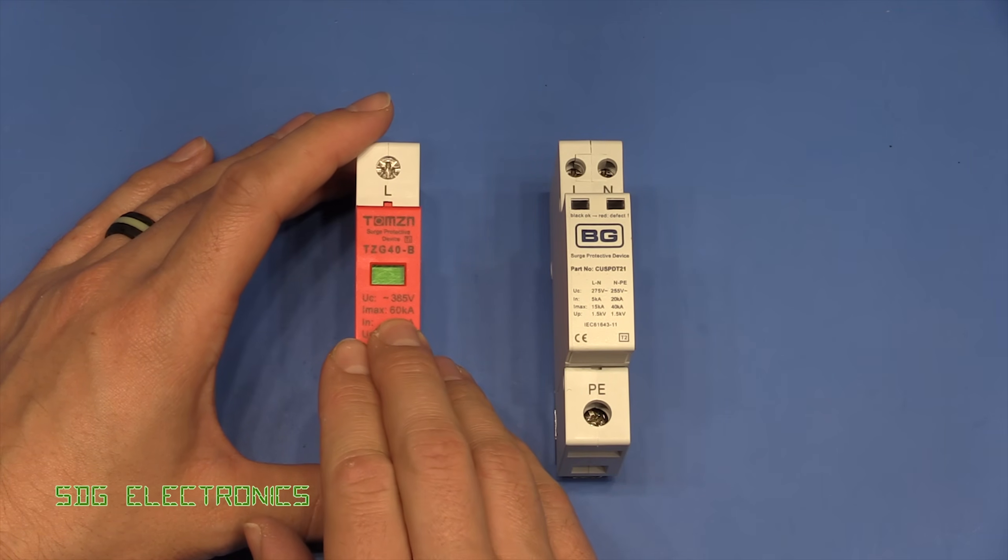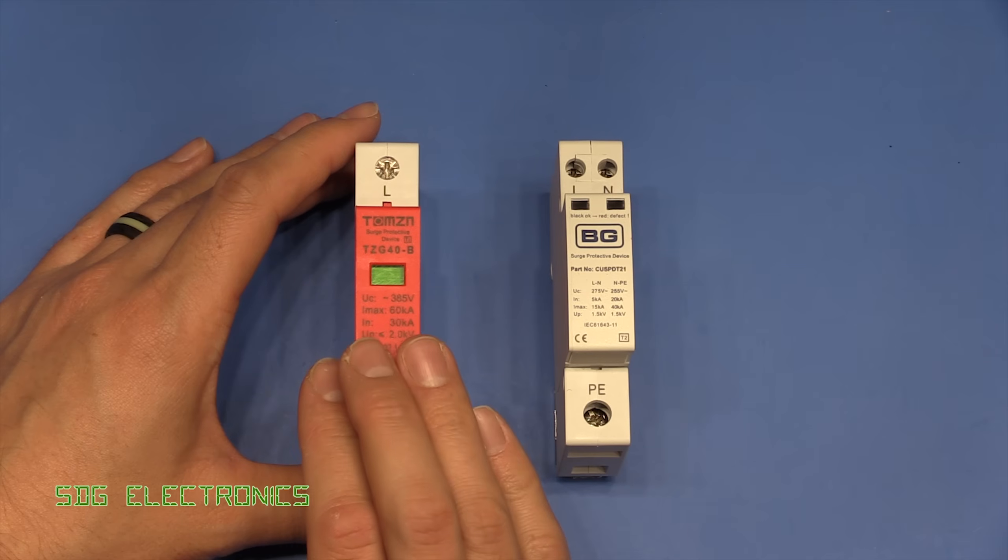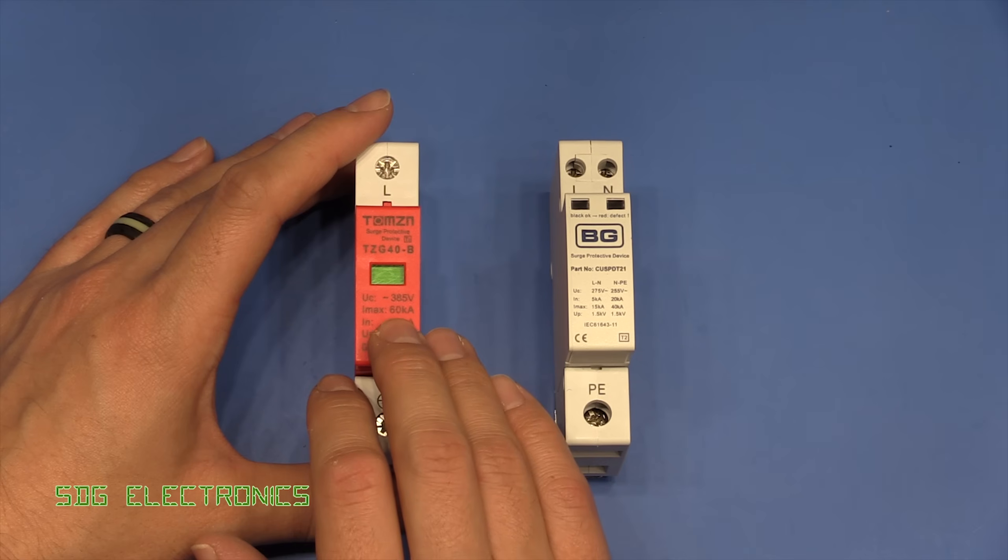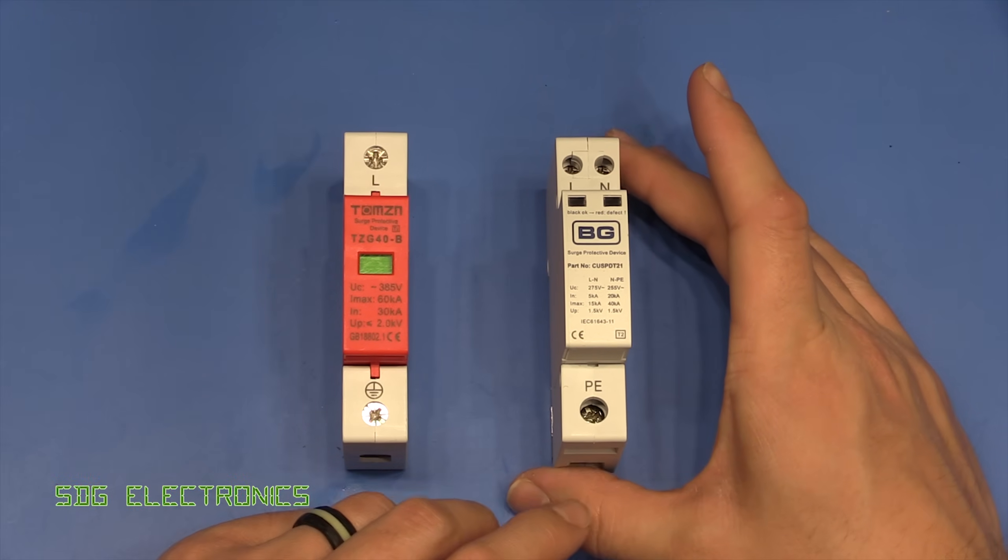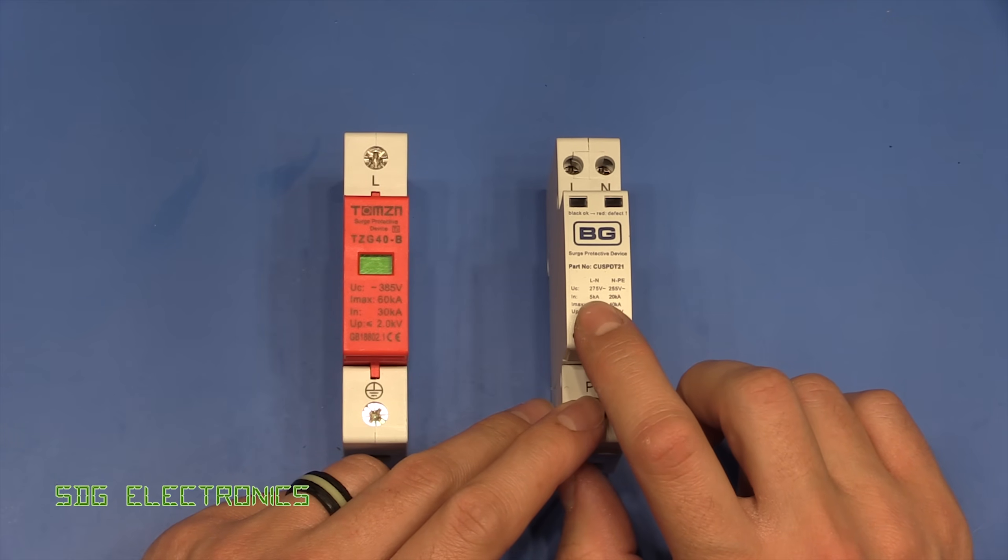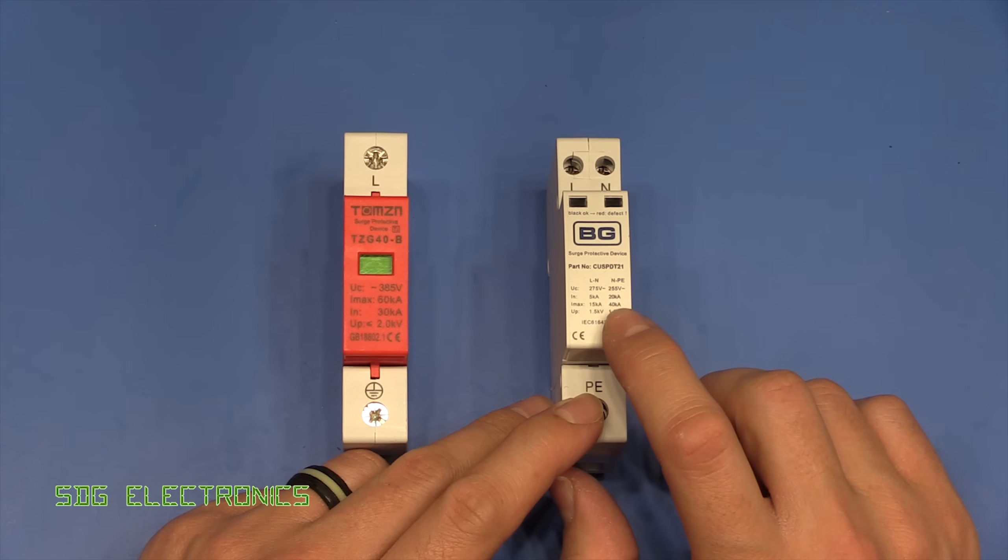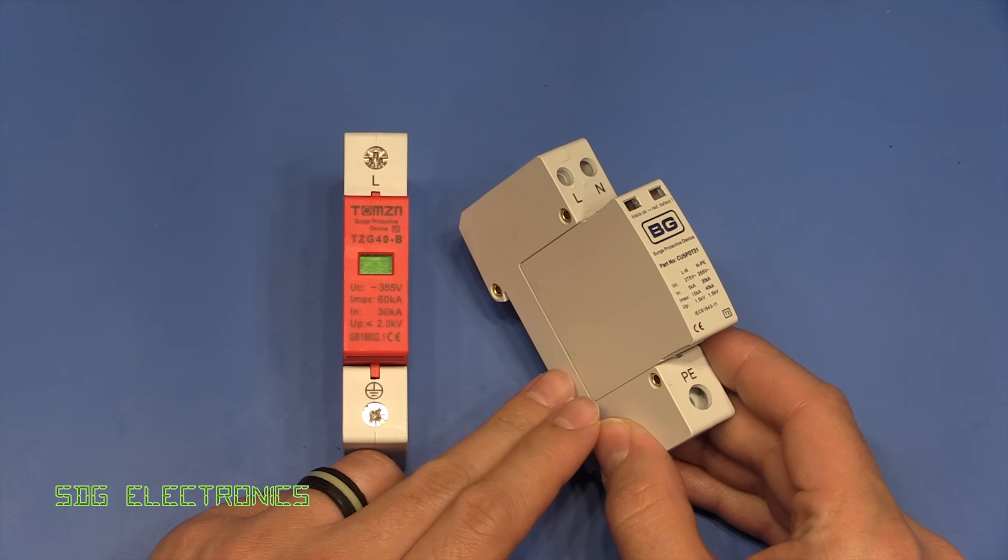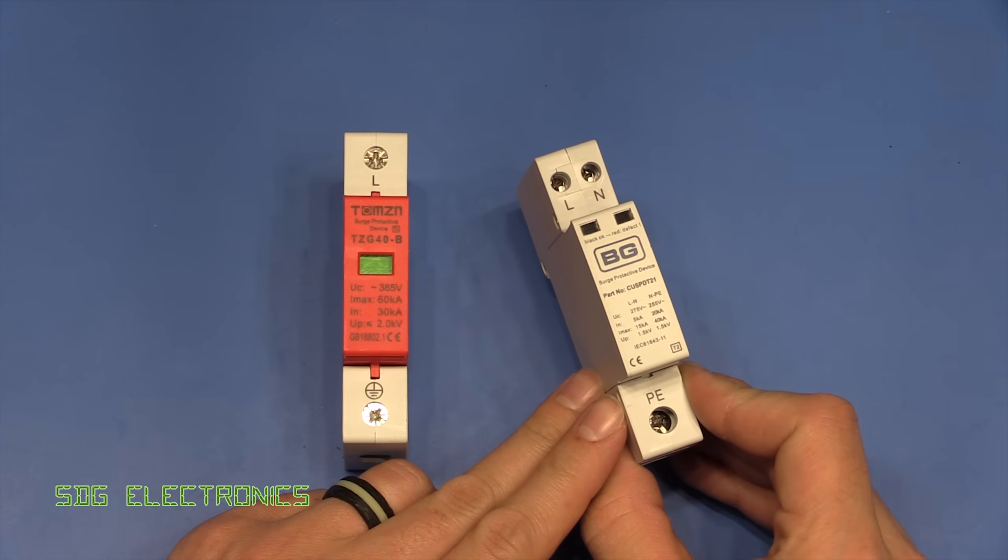So what I'm expecting in here is just maybe a large metal oxide varistor and possibly a gas discharge tube or something like that that can be used to shunt much higher currents. This one's rated up to 60 kilo amps, so a metal oxide varistor is not going to manage that, so there must be some other mechanism. On the BG device, it says from live to neutral it can support up to five kilo amp surges, which is most likely a metal oxide varistor - that's quite standard. Then between neutral and protective earth up to 40 kilo amps, so that's more likely to be your gas discharge tube. But even still, those components don't normally cost that kind of amount of money, so I'll be really interested to see what's inside this and how the two compare.